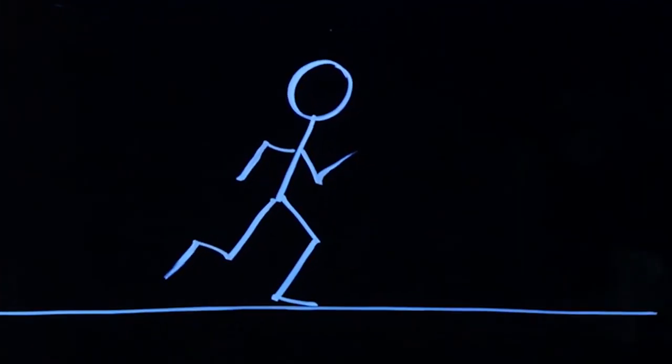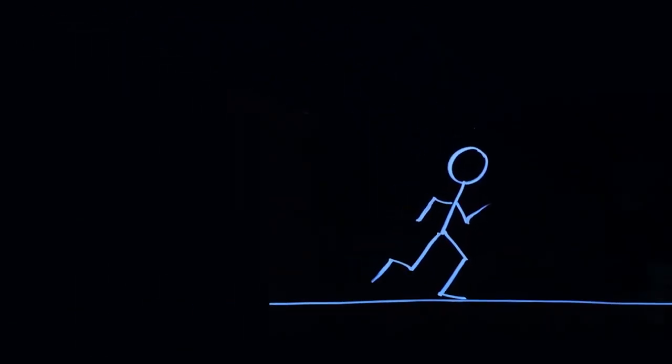And what we want to do is be able to describe the position, the velocity, the acceleration of this runner. In order to do that, we need our first mathematical tool, which is a coordinate system. What is a coordinate system?